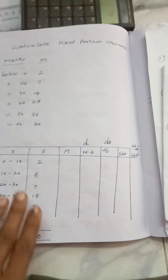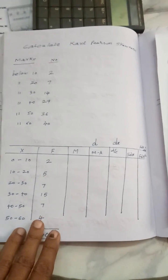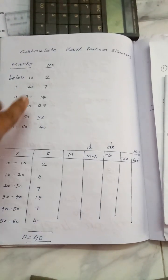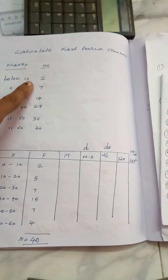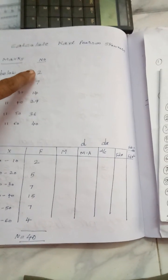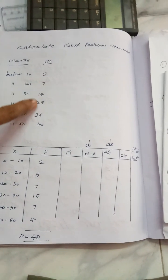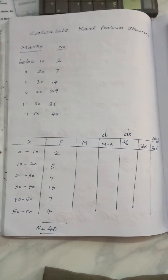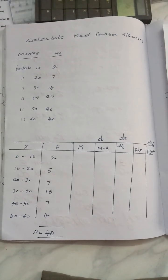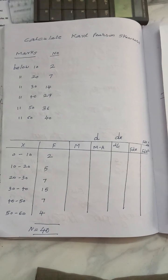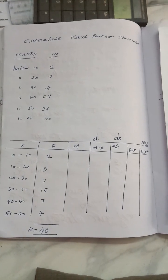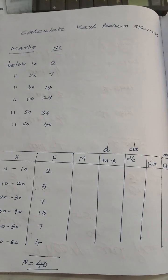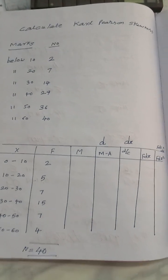We rearrange the data like this. First is the frequency: 2, 7 minus 2, below is 8. N is equal to 40. The class intervals are: 2, 7 minus 2, 14 minus 7, 29 minus 14, 36 minus 29, 40 minus 36.